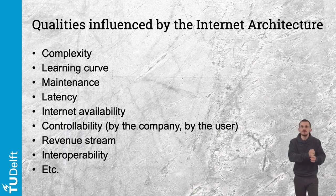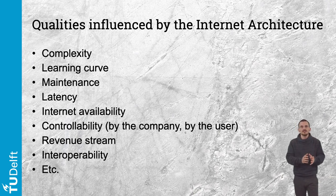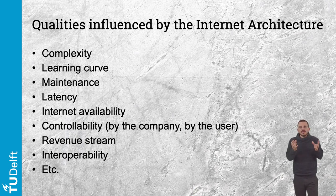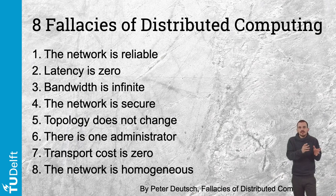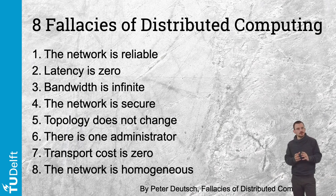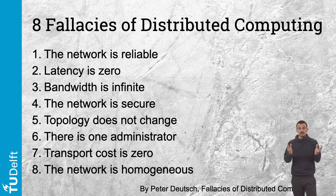When you work on digital products, it involves a network in most cases, making your design a distributed system. To wrap up this brief overview of internet architectures and product qualities, I would like to use the eight fallacies of Peter Deutsch. These fallacies touch on topics particularly related to the network dimension and the responsibility layer of the canvas, and each brings an implicit set of recommendations to consider when designing your connected product.